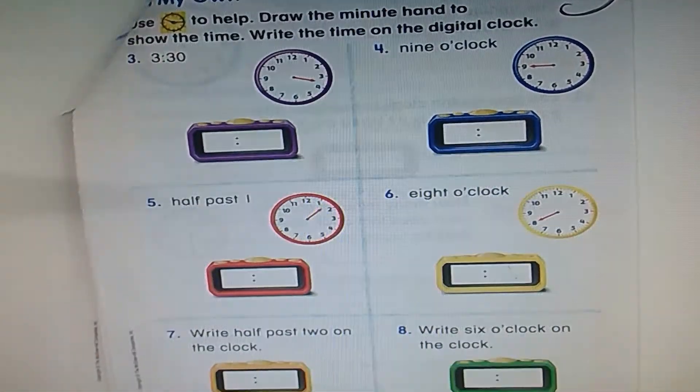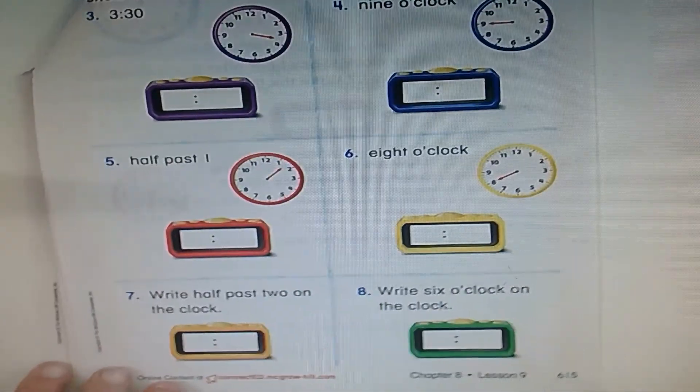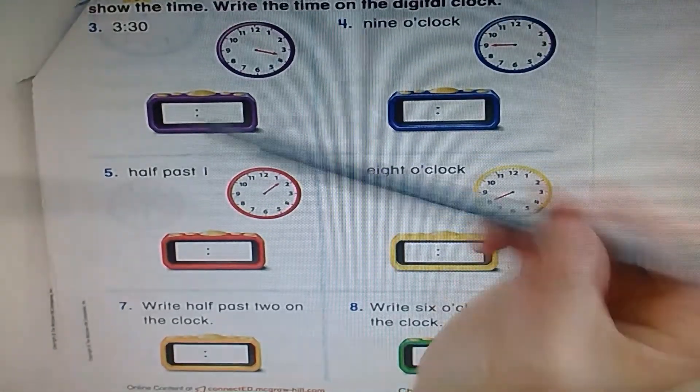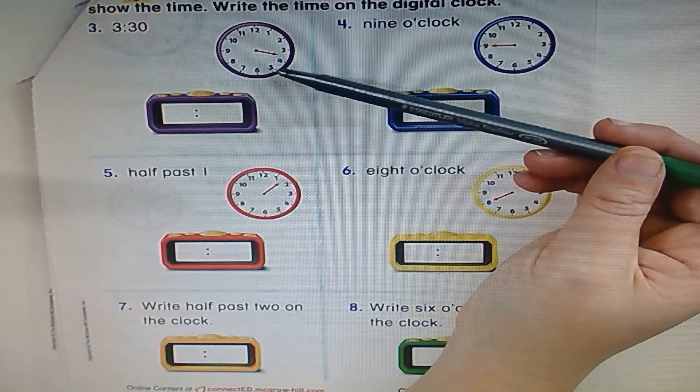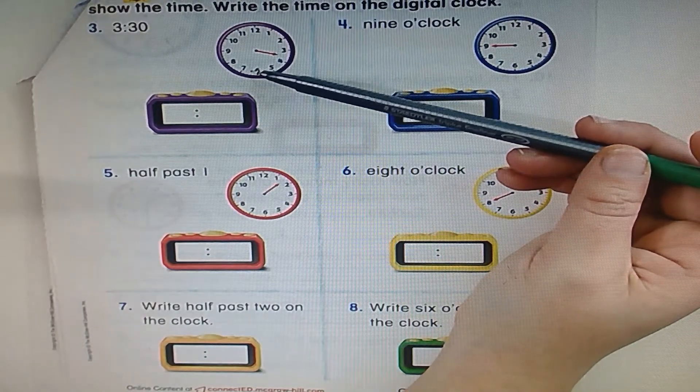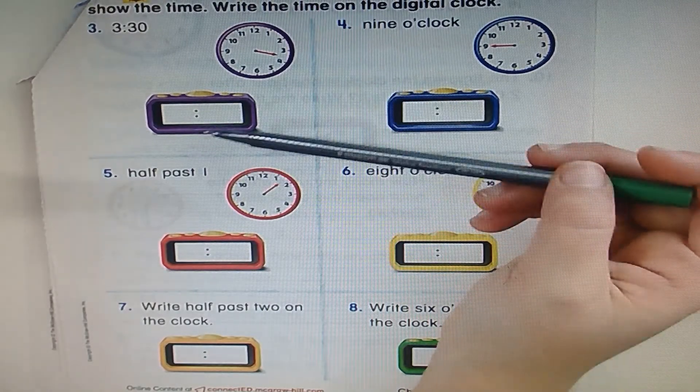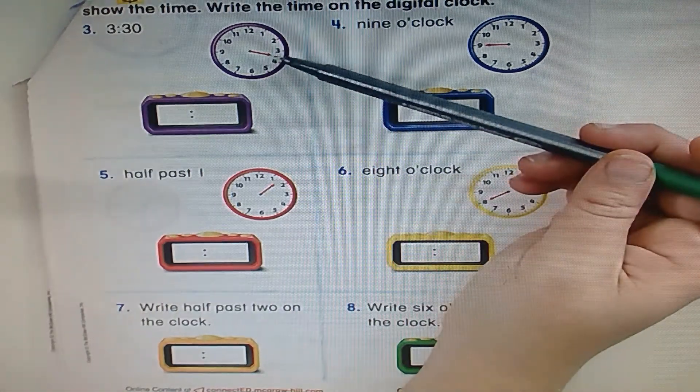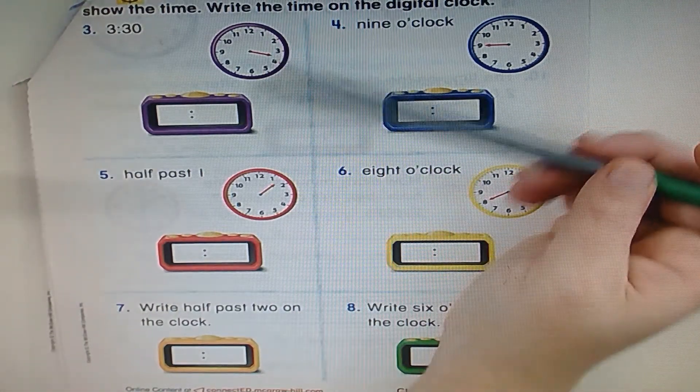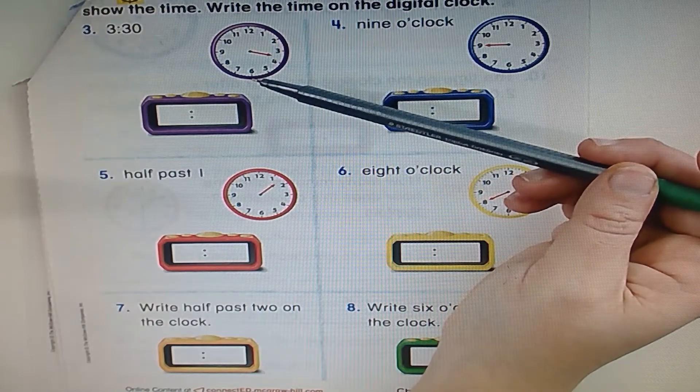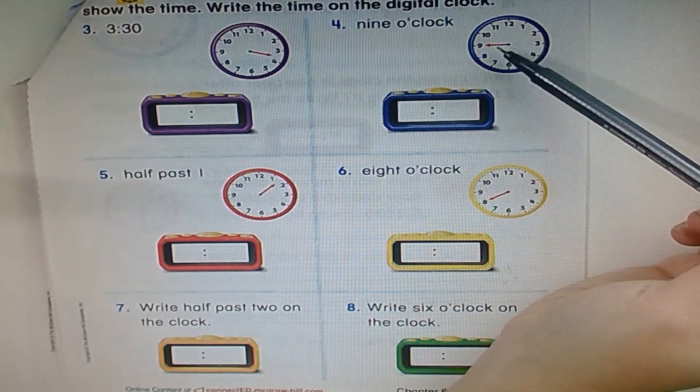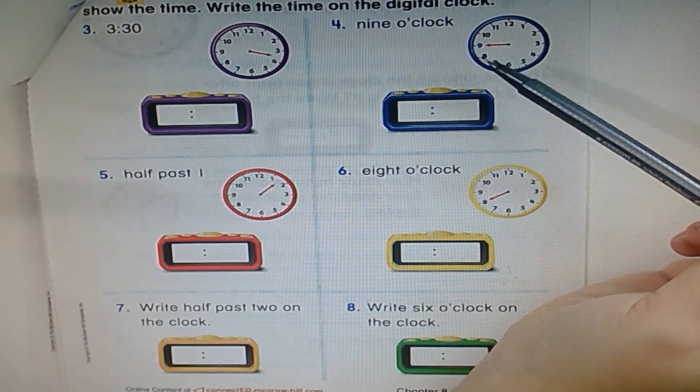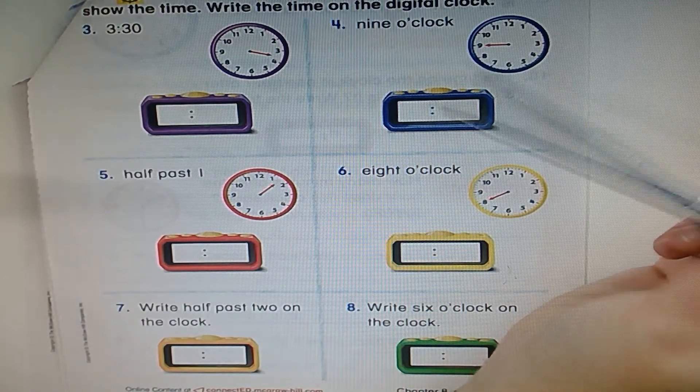I want you to try these on your own. So in just a moment, you'll pause the video and you'll draw in the missing hands, the missing minute hand, that's the long hand. And you'll write the digital time on each one. Remember, if it's not pointing directly at a number, then that means the minutes are 30. And if it is pointing directly at a number, the minutes are o'clock or zero zero. Go ahead and pause.